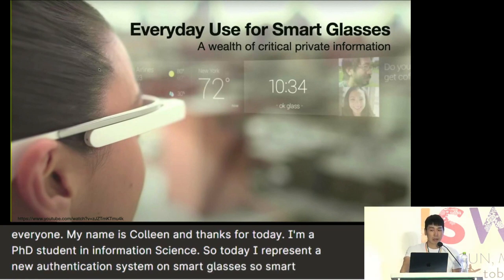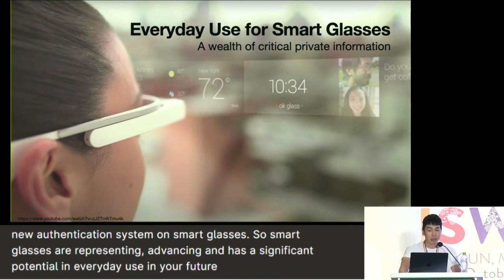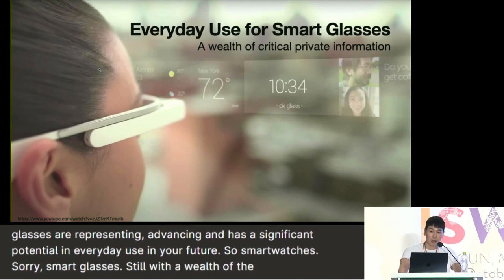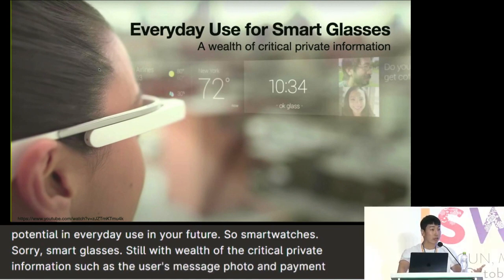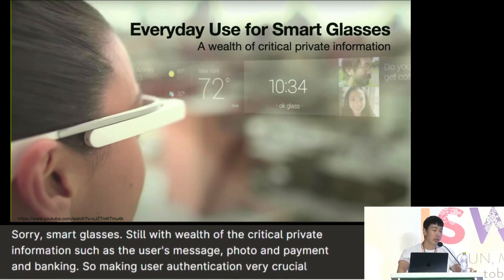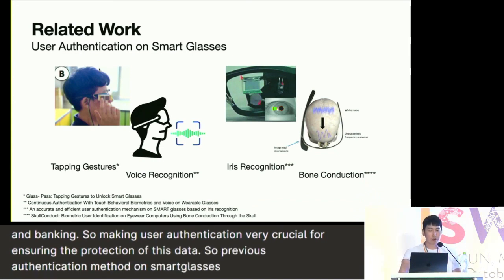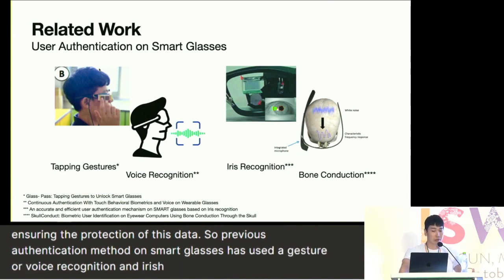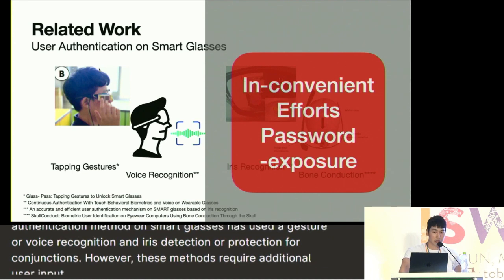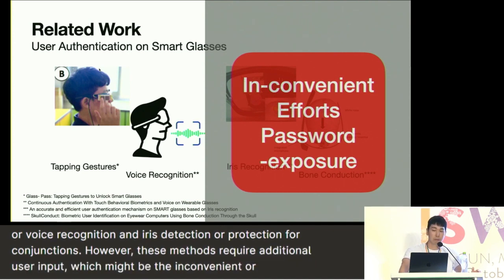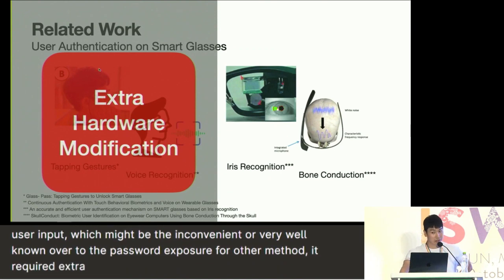Smart glasses are rapidly advancing and have significant potential in everyday use in the near future. Smart glasses deal with a wide range of critical private information, such as the user's messages, photos, payment, and banking, making user authentication very crucial for protecting this data. Previous authentication methods on smart glasses have used gesture or voice recognition, eye-tracking detection, or bone conduction. However, these methods require additional user input, which might be inconvenient or vulnerable to password exposure, while other methods require extra hardware modification or sensors.